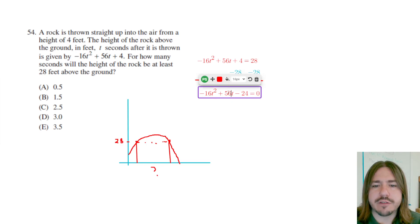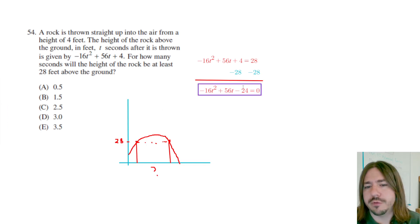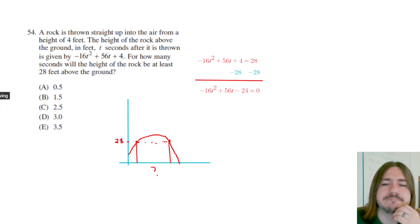That way we can use the zero product property when we factor, or like if you're going to use the quadratic formula, you need it equal to zero anyway. Okay, so I subtract 28 from both sides, and now I have negative 16t squared plus 56t. Let's see, 4 minus 28 would be negative 24 equals zero. Now I do want to try to factor this, but before I do that, I'm going to try to make each of these numbers as small as possible.